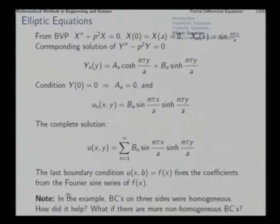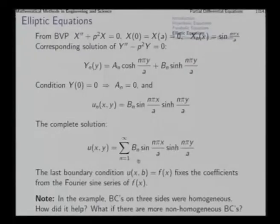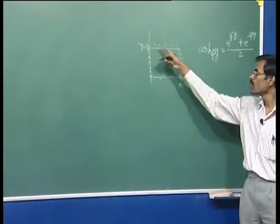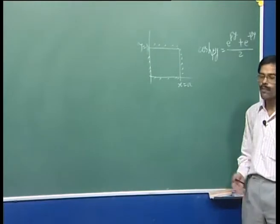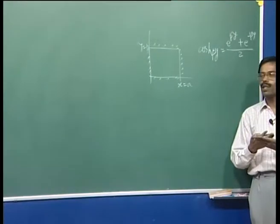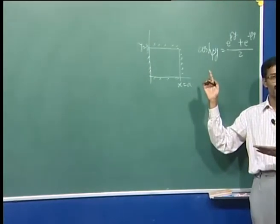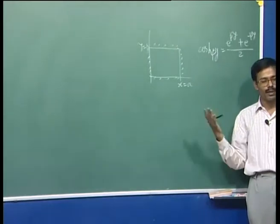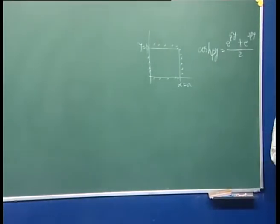In this case three sides had homogeneous boundary conditions, which simplifies the problem to tracking one Fourier series. If boundary conditions on all four sides are non-trivial, we split the problem into four sub-problems, each with one non-trivial boundary condition and zeros on the others. Superimposing the four solutions gives the complete correct solution.